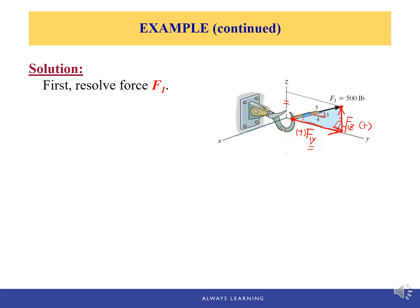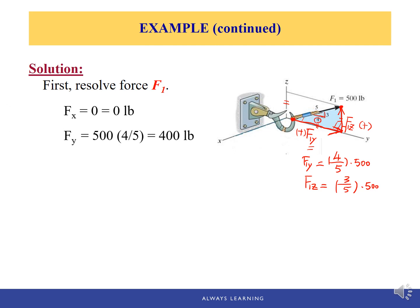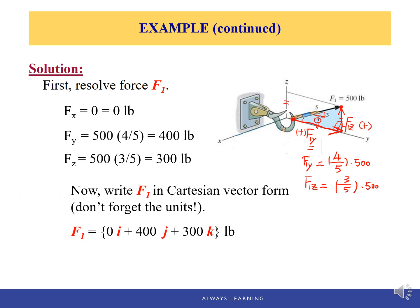F1y, because it is parallel to the side with length 4, equals 4/5 times F1, which is 4/5 × 500 = 400. Similarly, F1z equals 3/5 × 500 = 300. Fx will be 0. So F1 in Cartesian vector form equals 0 i-hat plus 400 j-hat plus 300 k-hat.